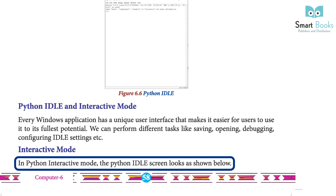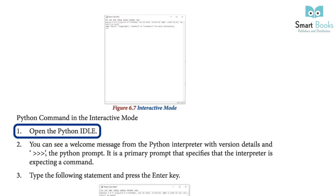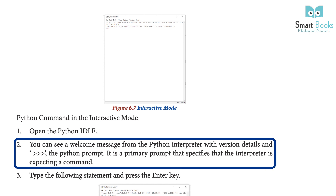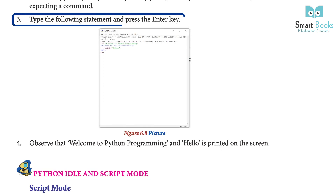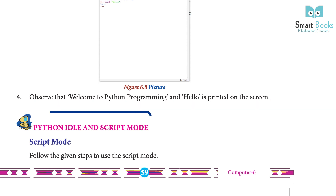Interactive mode: in Python interactive mode, the Python IDLE screen looks as shown. Python commands in interactive mode: 1. Open the Python IDLE. 2. You can see a welcome message from the Python interpreter with the version details and the Python prompt — the primary prompt specifies that the interpreter is expecting a command. 3. Type the following statement and press the Enter key. 4. Observe that 'Welcome to Python programming' and 'hello' are printed on the screen.